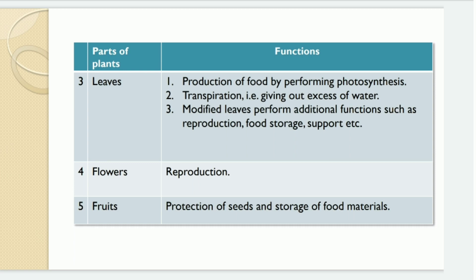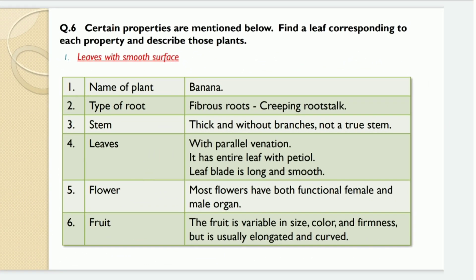The third part of the plant is leaves. Functions of leaves: first, production of food by performing photosynthesis — this is the main function; second, transpiration, that is giving out excess water; third, modified leaves perform additional functions such as reproduction, food storage, support, etc. The main function of flowers is reproduction. The function of fruits is protection of seeds and storage of food materials.